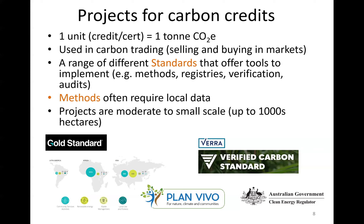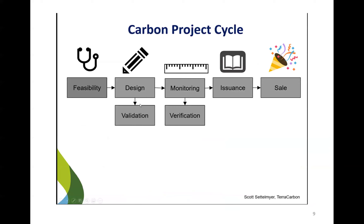These methods typically require some kind of local data. Projects are moderate to small in scale — up to thousands of hectares — and the carbon accounting is held to a very high standard. Looking at a carbon project cycle, you're using a lot of science in the feasibility, design, and monitoring phases. The science is really concentrated in those early parts of the project — feasibility and design — before the issuing of carbon credits and sales.